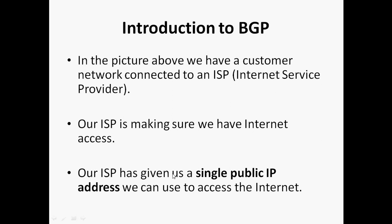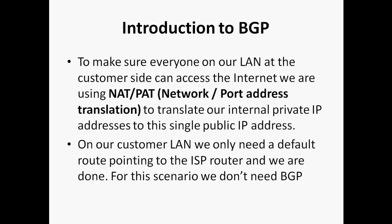Our ISP is making sure we have internet access. Our ISP has given us a single public IP address we can use to access the internet. If you are using a broadband connection or mobile or whatever it is — you connect to Wi-Fi, go to Google, and type 'what is my IP' — you will get one public IP provided by your ISP. Using that public IP only, you can access the internet. To make sure everyone on our LAN or the customer side can access the internet, we use NAT and PAT. NAT is Network Address Translation and PAT is Port Address Translation. NAT is used to translate IP from private to public and vice versa.